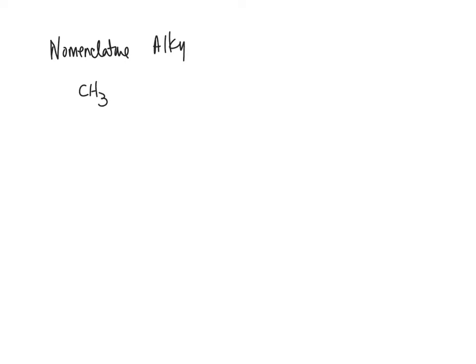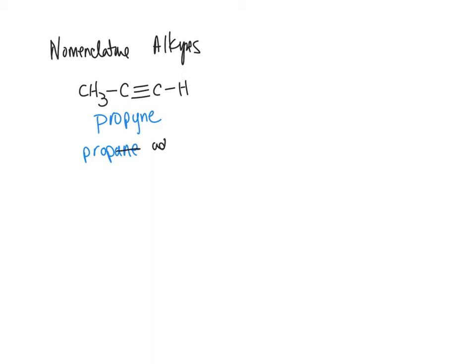Let's do nomenclature. Here is an alkyne — how many carbons do we have? Three. Propyne. So if you take propane, we drop the '-ane' and add '-yne.' That's how you get propyne — a three-carbon alkyne. You don't have to put a number; if there's no number, it's assumed to be carbon number one.